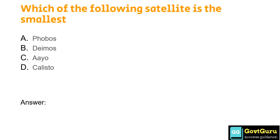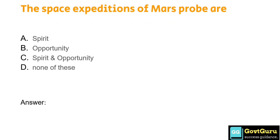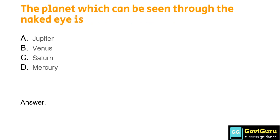Which of the following satellites is the smallest? Option A: Phobos, Option B: Deimos, Option C: Io, Option D: Callisto. The answer is Option B, Deimos. The space expeditions of the Mars probe are: Option A: Spirit, Option B: Opportunity, Option C: Spirit and Opportunity, Option D: none of these. The answer is Option C, Spirit and Opportunity. The planet which can be seen through the naked eye is: Option A: Jupiter, Option B: Venus, Option C: Saturn, Option D: Mercury. The answer is Option C, Saturn.